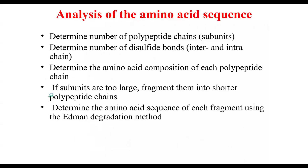You can determine the amino acid sequence present in a particular polypeptide or protein. First, determine the number of polypeptide chains in the protein — since a protein can have more than one. Second, determine the number of disulfide bonds; remember that methionine and cysteine have the potential to produce disulfide bonds. Third, determine the amino acid composition of each polypeptide chain.